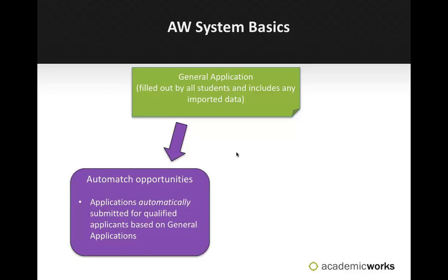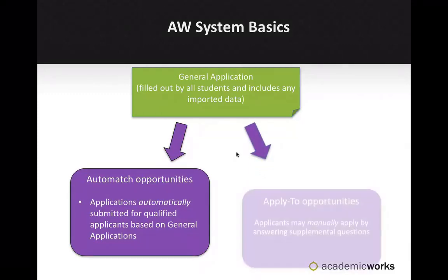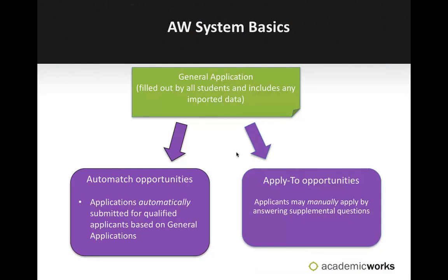But something else is happening as well. Perhaps you have some apply-to opportunities in your system. An apply-to opportunity would be any opportunity that requires applicants to answer additional questions that weren't included on the general application. These opportunities are recommended to students based on qualifications, and applicants can then manually apply by answering those supplemental questions. Once they have submitted their apply-to opportunities, it's time for them to go through the reviewing and possibly awarding process.